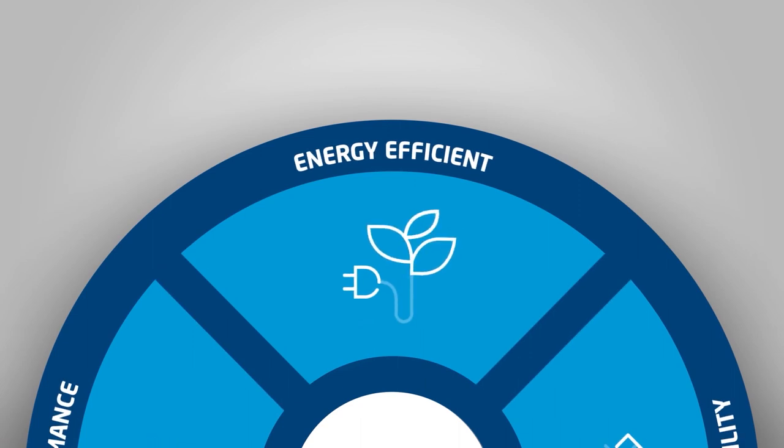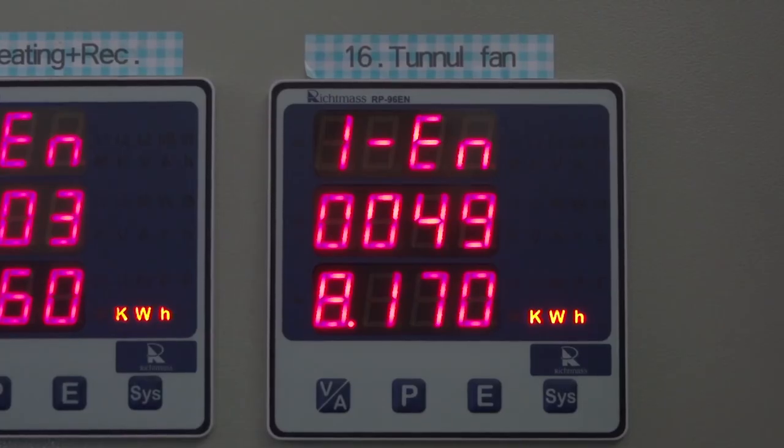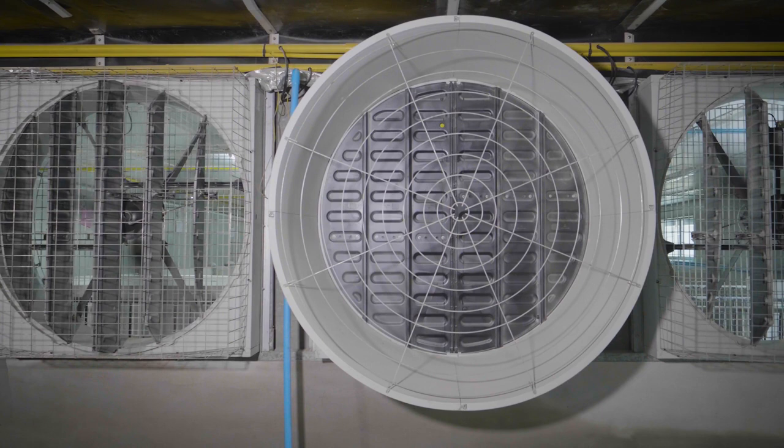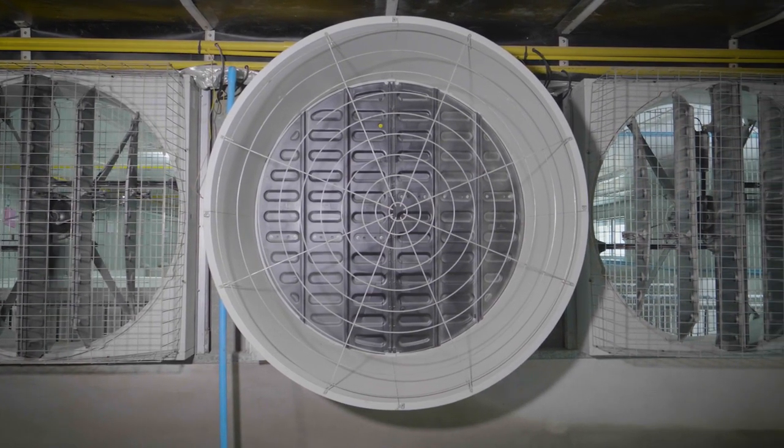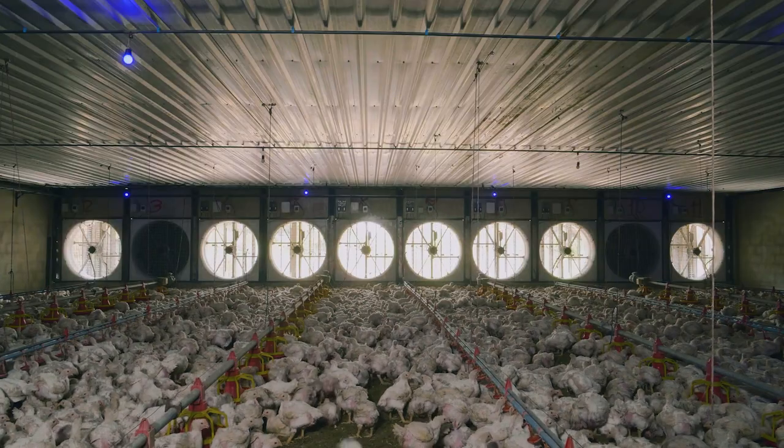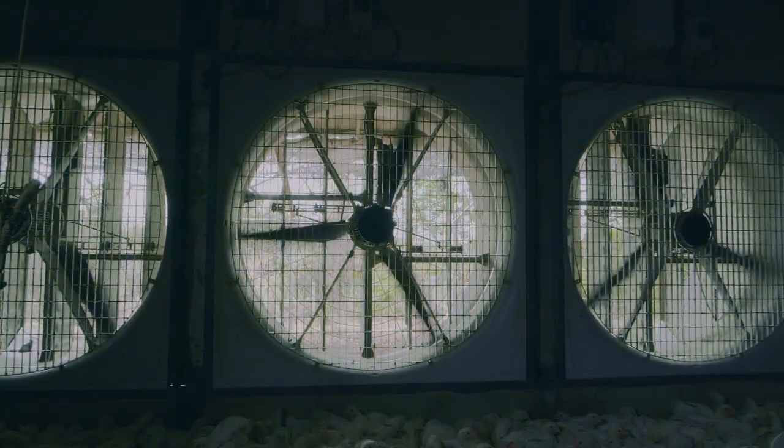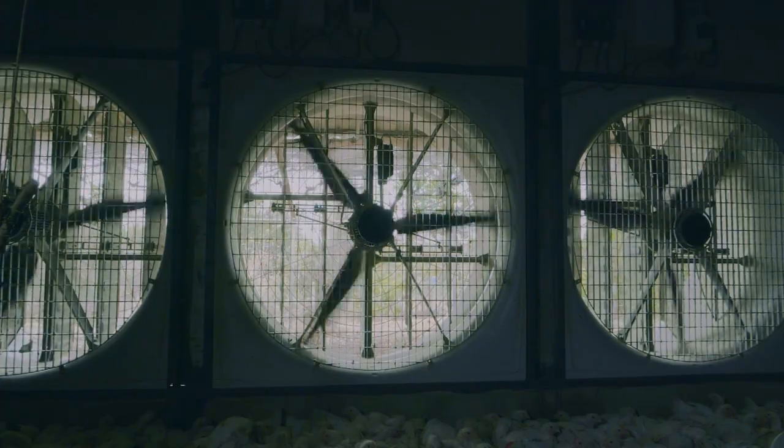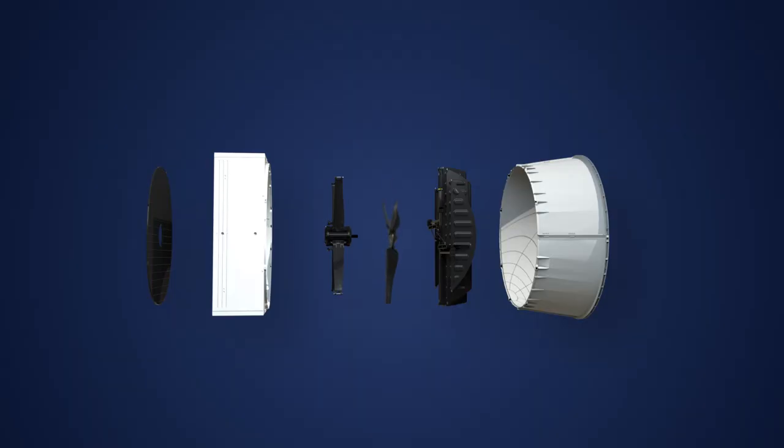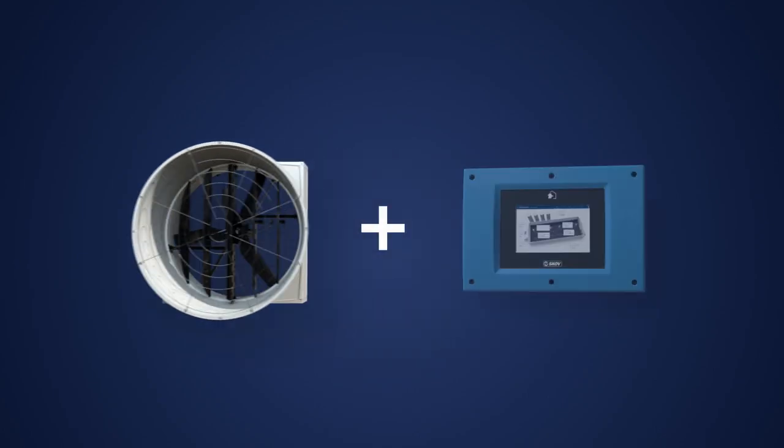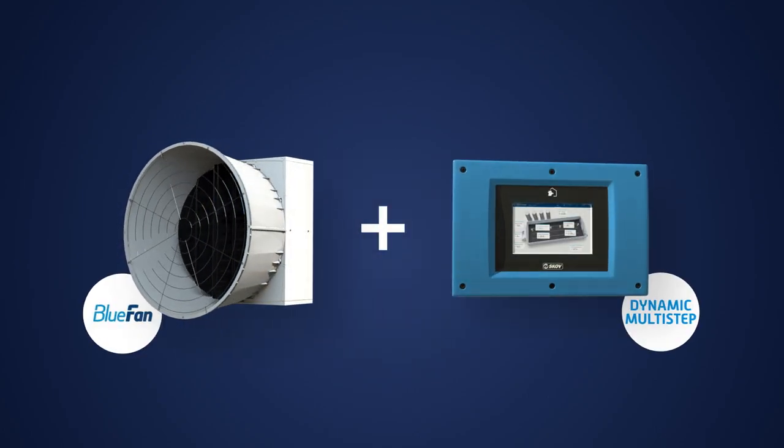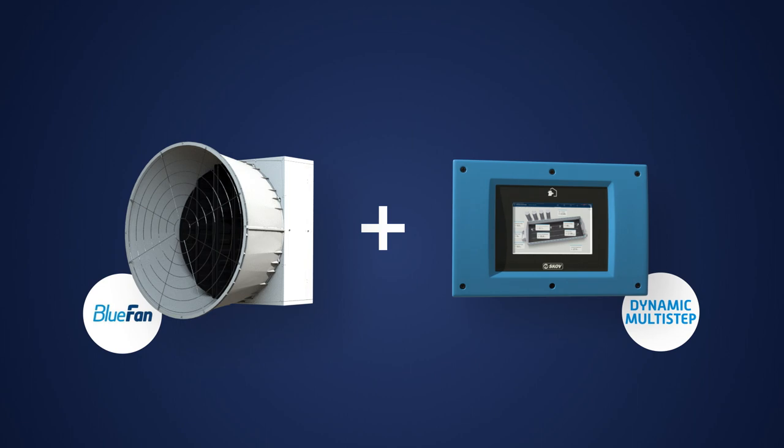The BF50 is very energy efficient and ensures minimum energy consumption to exhaust air from the livestock houses. The pressure stable design ensures that the fans run optimally also in windy weather. When used in combination with the dynamic multi-step control principle, the customer gets the most energy efficient ventilation system on the market with this size of fan.